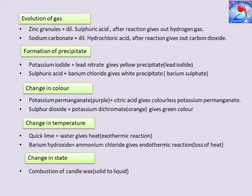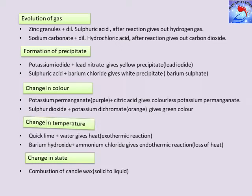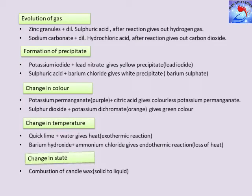Change in temperature: quick lime, when added with water, gives out heat — this is an example of an exothermic reaction, meaning heat is evolved. Barium hydroxide plus ammonium chloride gives an endothermic reaction — an example of loss of heat, meaning absorption of heat. Change in state: combustion of candle wax is an example for change in state, as the candle wax changes from solid to liquid.